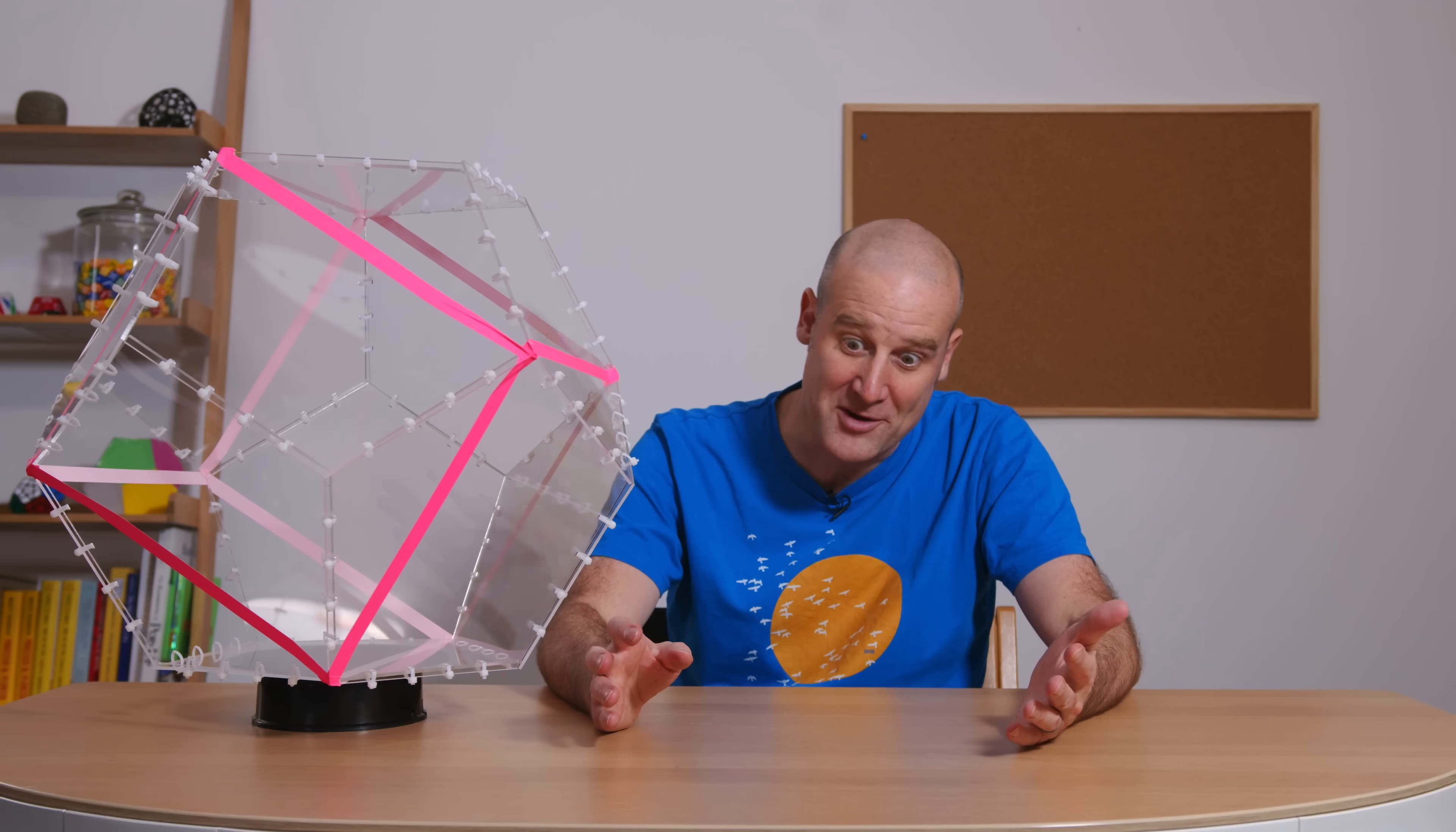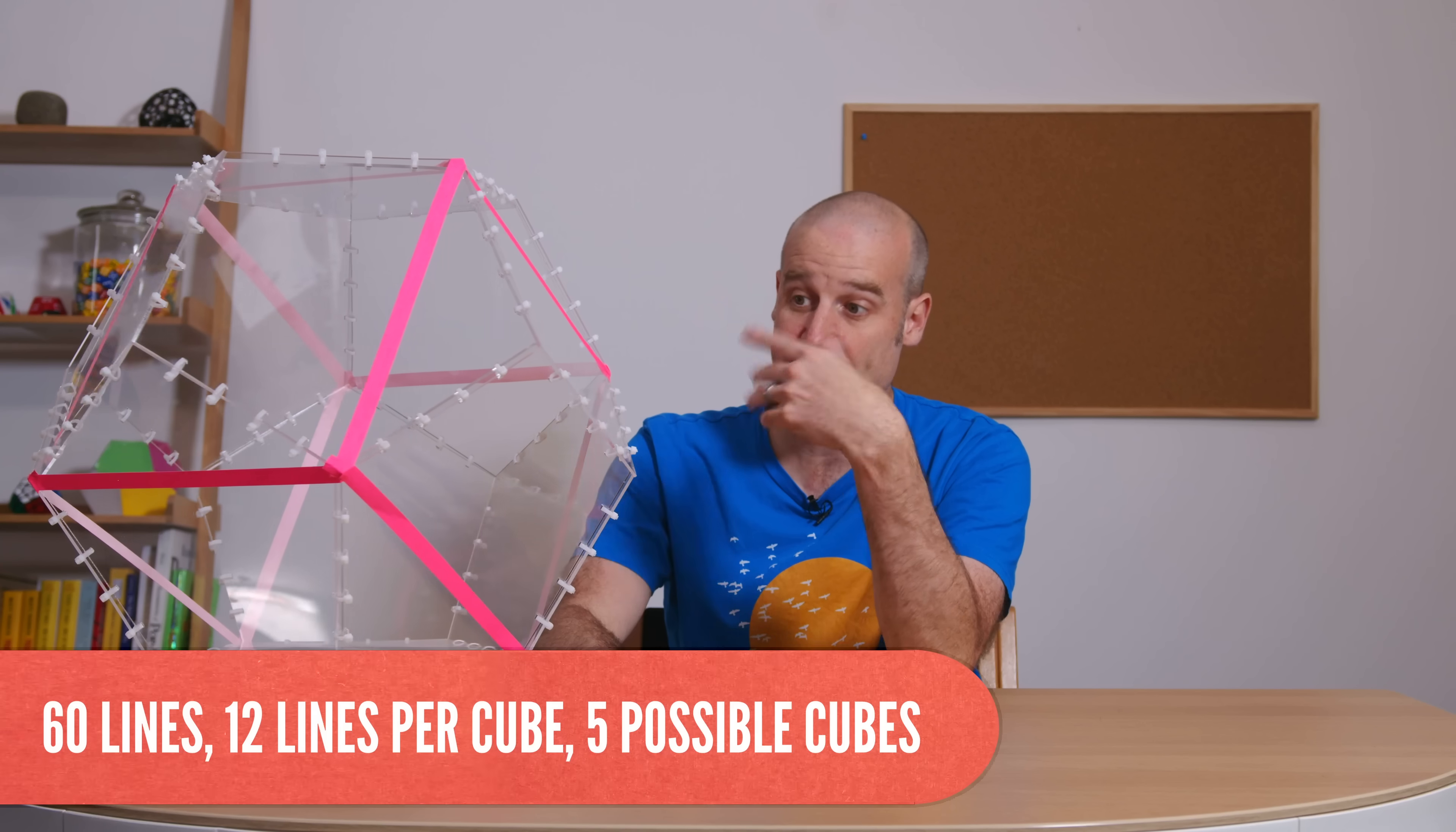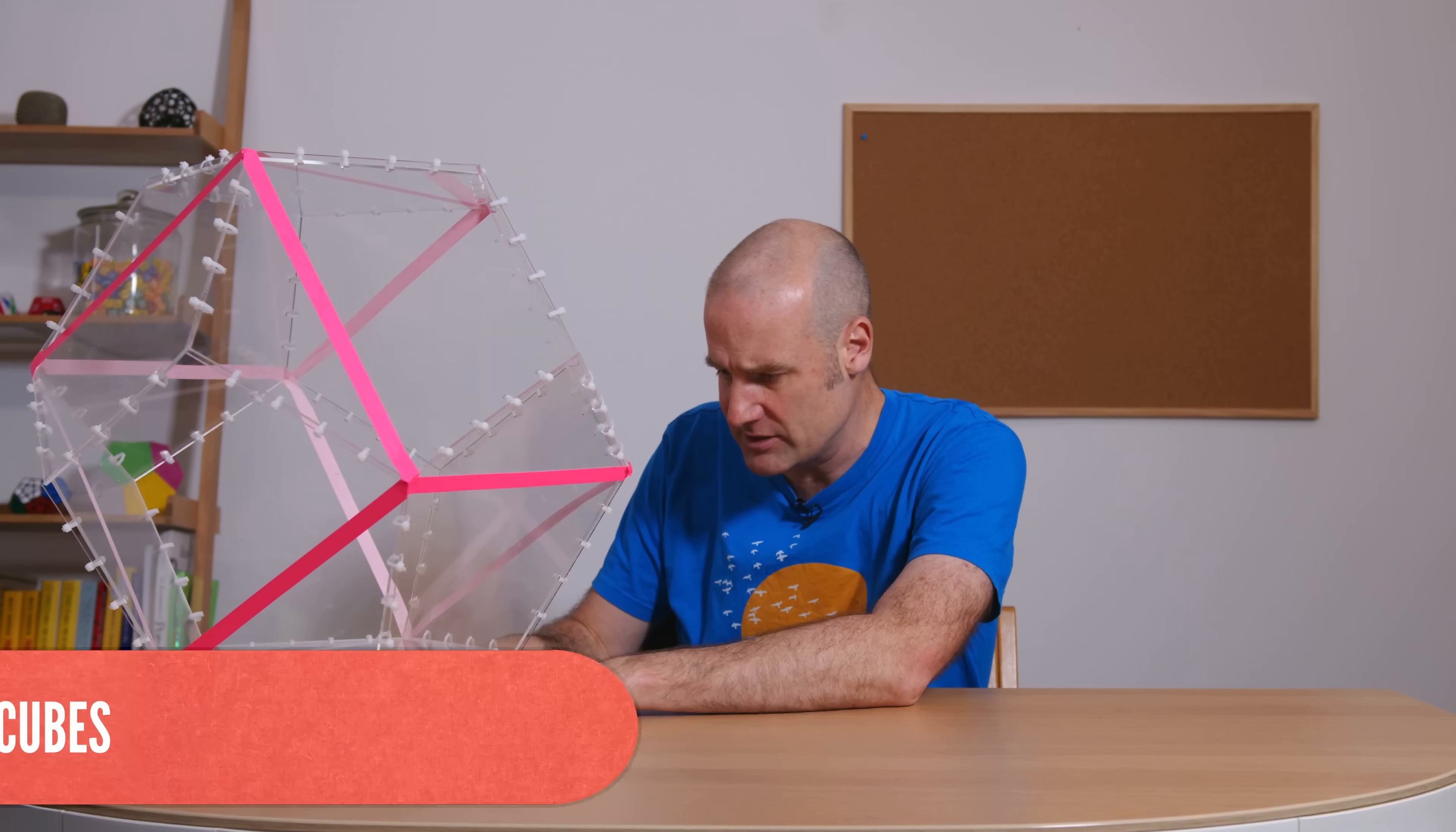So actually, because there are 5 diagonals per each of the 12 faces, we can get 5 cubes that each have 12 edges. We've just got to be very careful and line them up. And I'm going to stop that from spinning. There we go.